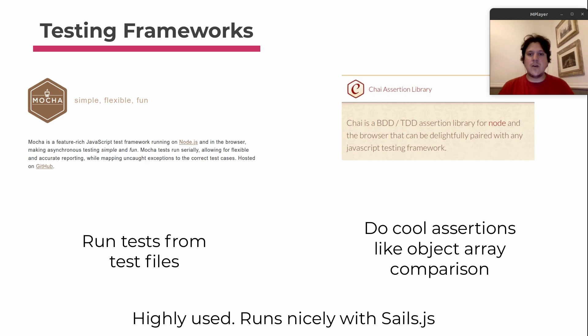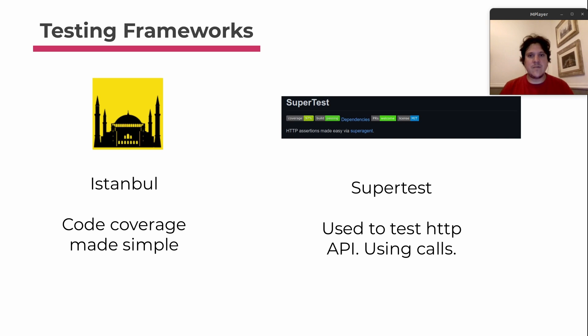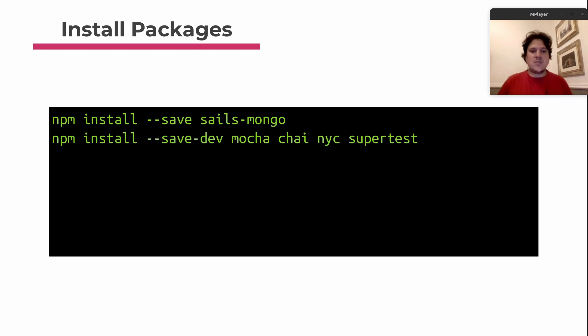We're also using Istanbul (now called nyc), which is a code coverage library that tells you what percent of your code is already being tested. And a library called Supertest, which is used to call APIs — just like Axios or Fetch — but you can make assertions directly, like: calling that API, I need the return code to be 404. You can also test headers and all that stuff very easily.